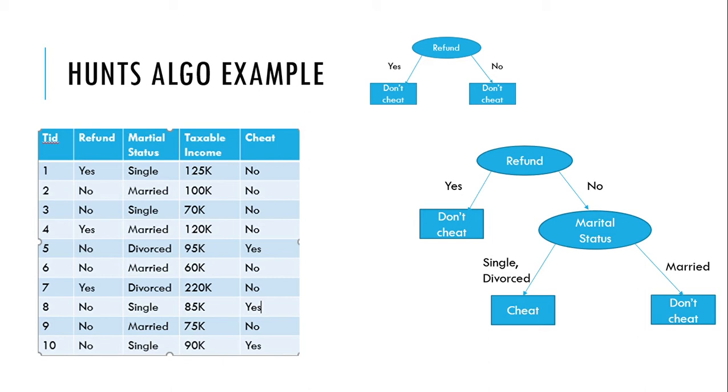Based on certain attributes we are going to take that decision. We have three different attributes here. The first one is refund, second one is marital status, and these two columns are called categorical columns.